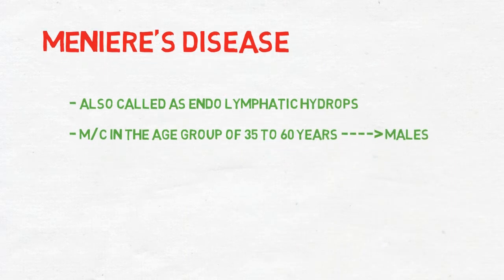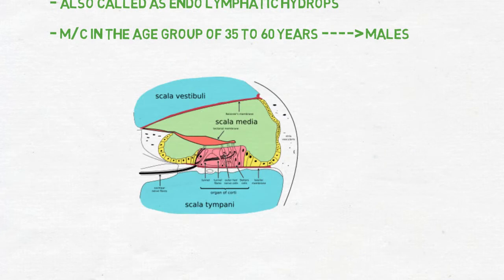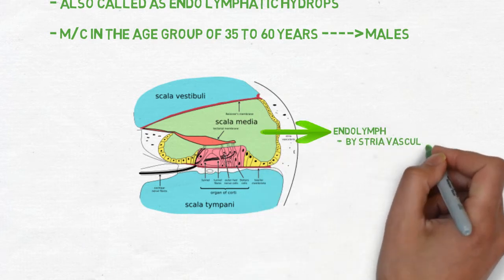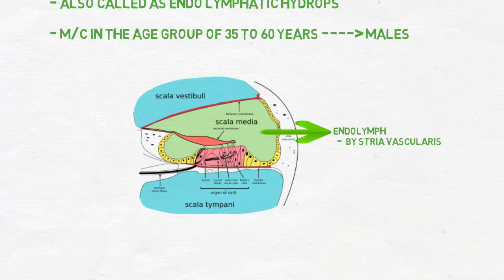We know the anatomy of inner ear in which it is divided into three parts: scala vestibuli, scala media, and scala tympani. Scala vestibuli and tympani contain perilymph while scala media contains endolymph which is secreted by the stria vascularis.